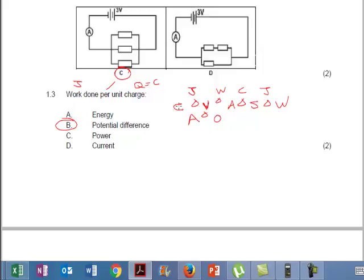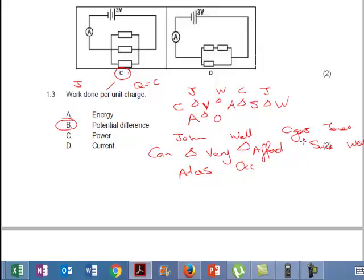If you didn't understand this or if you don't know this little thing, I will tell it to you again. It goes, Can John very well afford cigars since James went, alas, very occasionally. And the reason that I was taught this when I was at school, because back in the Oxwagon days when I was at school, we didn't have formula sheets. Whereas you guys can go and look on your formula sheets, and you will find all of these relations. Also you should know that the work done per unit charge is the potential difference, which is volts. Okay, let's move on.